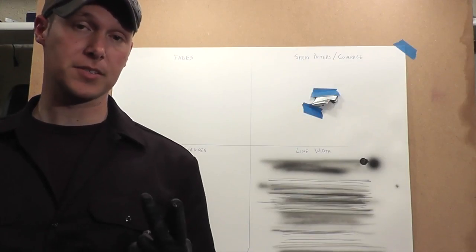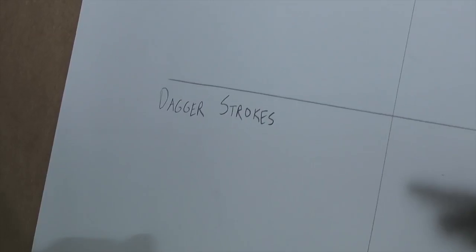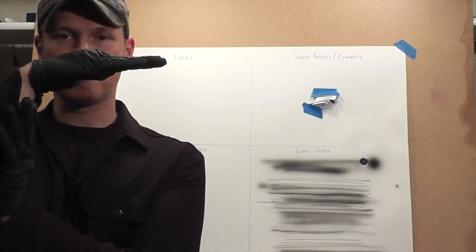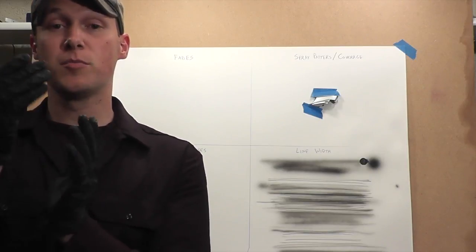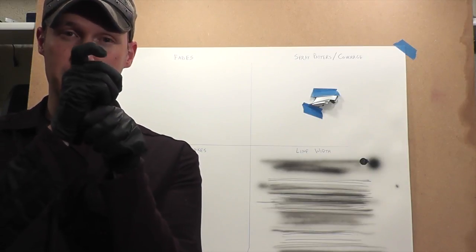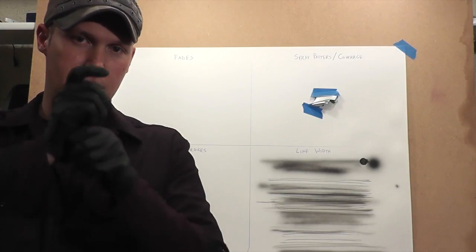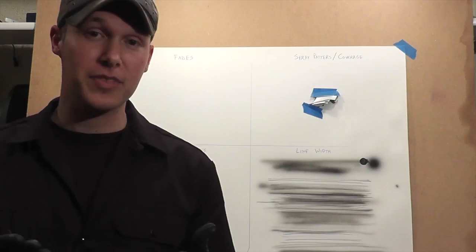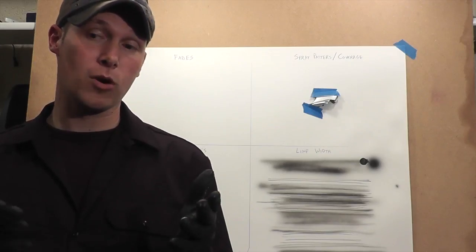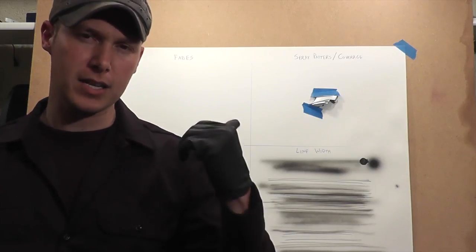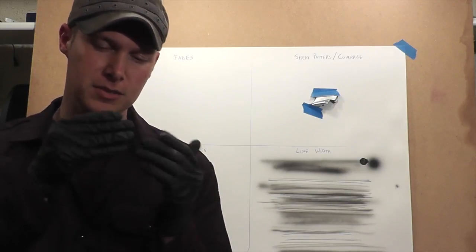Remember: the further back the trigger goes, the more distance you'll need from the paper. Now let's move on to the second exercise: dagger strokes. How this works—the principle is you're moving your hands and your trigger in conjunction with the distance of the paper. It's a circular pattern.